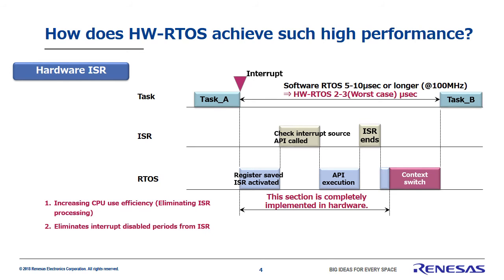Also, the ISR is usually run with interrupts disabled, so with ISR run on hardware, that interrupt disabled period is completely eliminated. There's also no need to make a handler when this function is used — everything can be run as a task. Since tasks can be activated quickly, you simply raise the priority levels of the tasks activating time-critical processes.